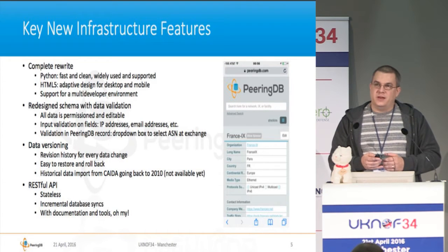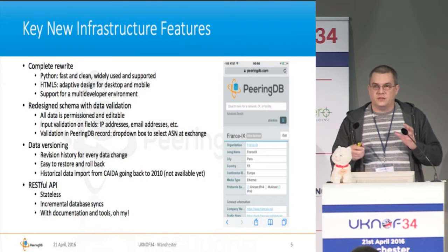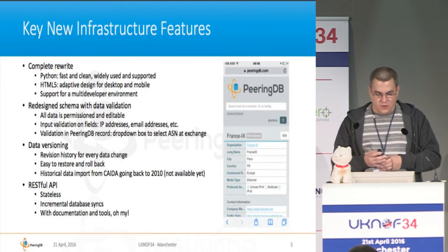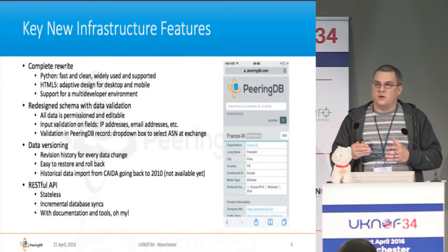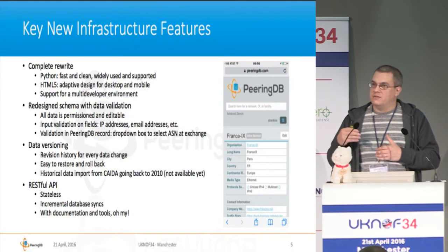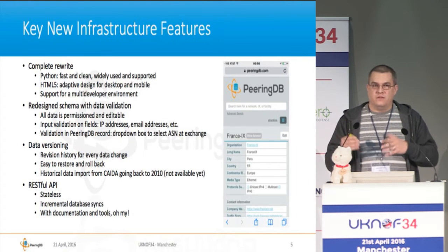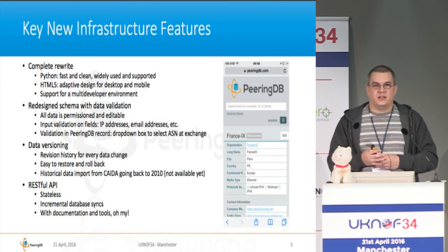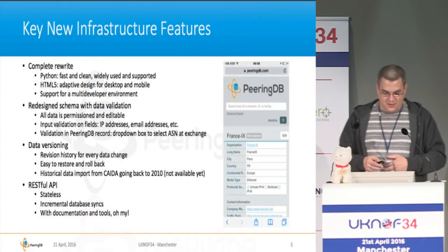The schema is completely redesigned, which gives us data validation in two forms. There's input validation on the IP address fields, telephone fields, and email address fields, which we couldn't do before. There's also validation within PeeringDB itself — where possible, if there's an option to fill in something, we try to use pre-validated data. For example, if you're peering at an exchange, you can only choose the ASN you've entered as the ASN of that exchange, preventing people from entering random ASNs.